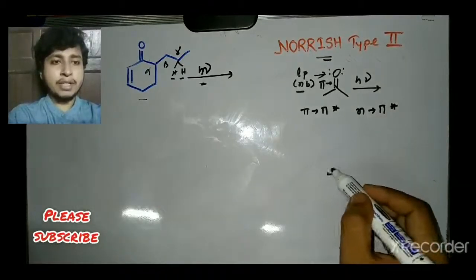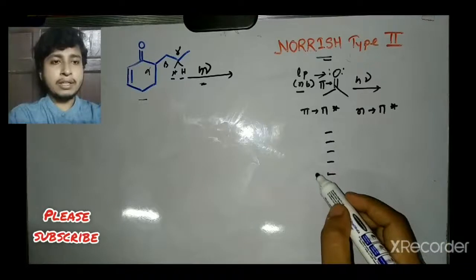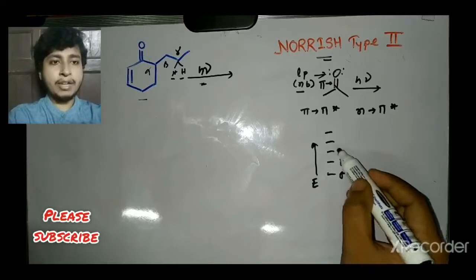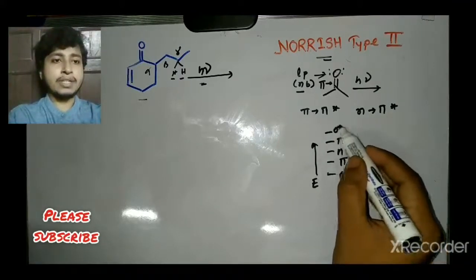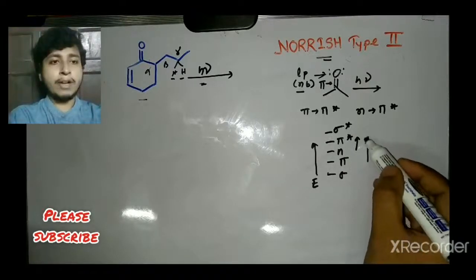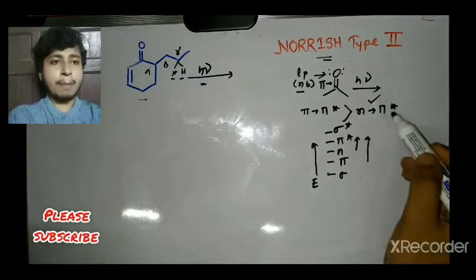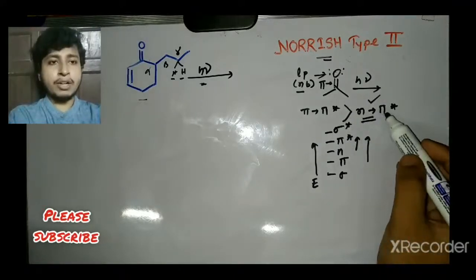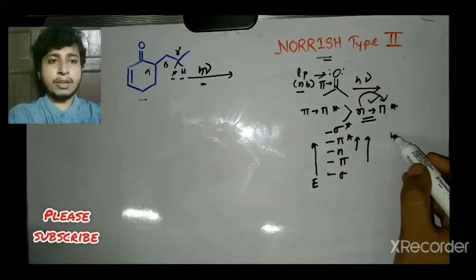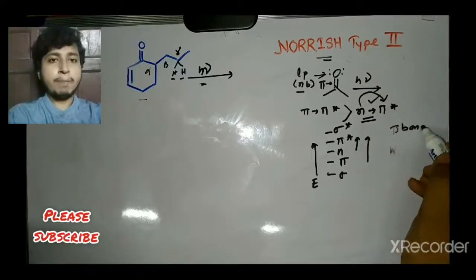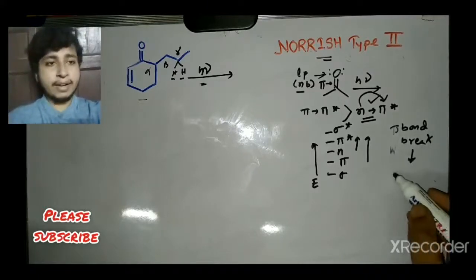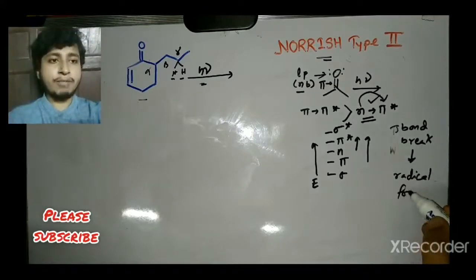Looking at the energy diagram, the molecular orbital energy levels go: sigma (lowest), then pi, then non-bonding, then pi*, then sigma*. The n→π* transition requires very little energy compared to π→π*, so it happens faster. The non-bonding electron transfers to the π* orbital, which causes the pi bond to break and a carbon-oxygen diradical forms.